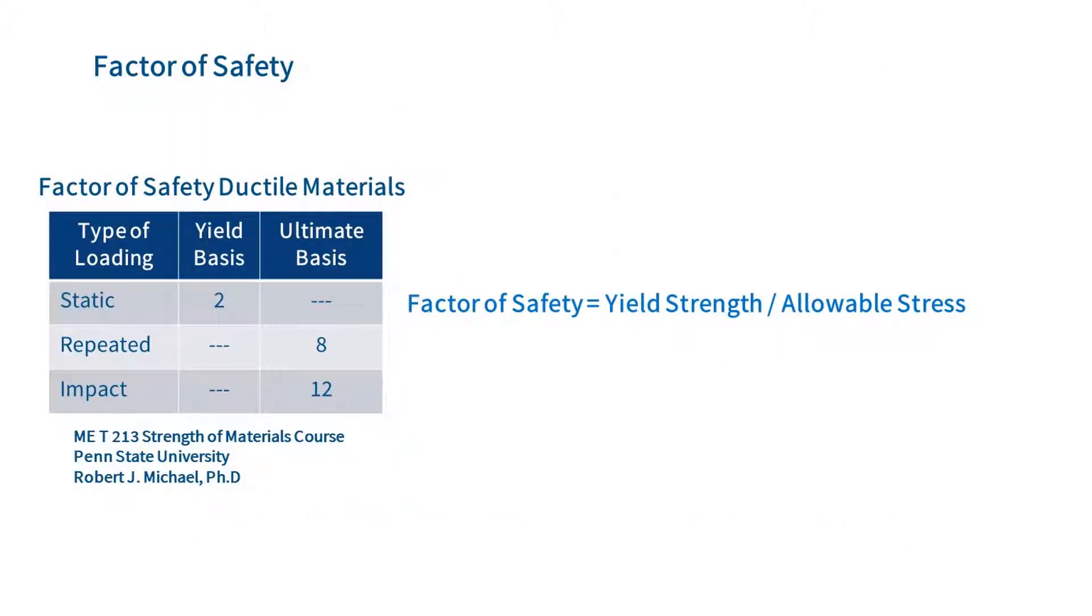We are now ready to use stress limits to design a structural part. To do that without explaining everything you need to know about fatigue or dynamics, we will introduce the concept of a factor of safety. Depending on the type of loading, the factor of safety is defined as the yield strength divided by the allowable stress.